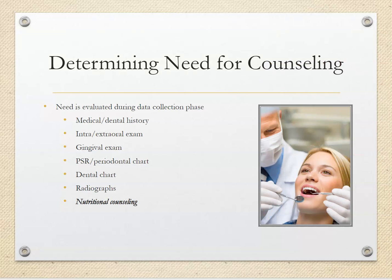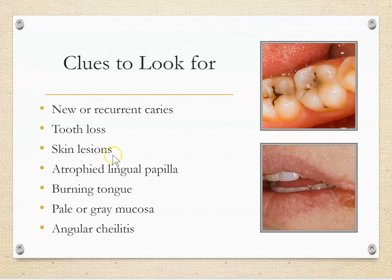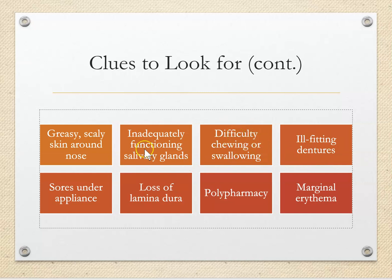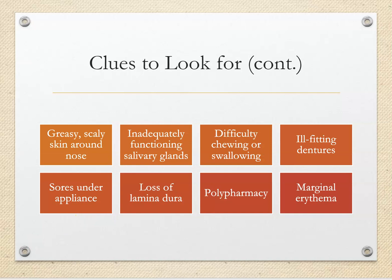You determine when a client needs counseling during the assessment phase, when you're gathering data. If you notice missing teeth, lots of cavities, poor gingival health, or lesions inside the mouth, nutrition may be playing a role. Clues include cavities, tooth loss, angular cheilitis, and a burning tongue — all examples of potential nutritional deficiencies.